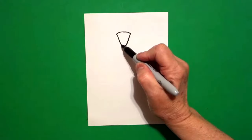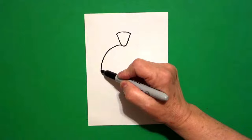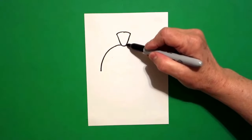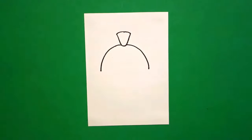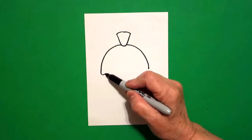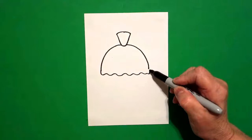Come to this point on the left and draw a big curve line down on the left. Come back up on the right side and draw a big curve line down on the right. Come back to the left and draw a wavy line to connect.